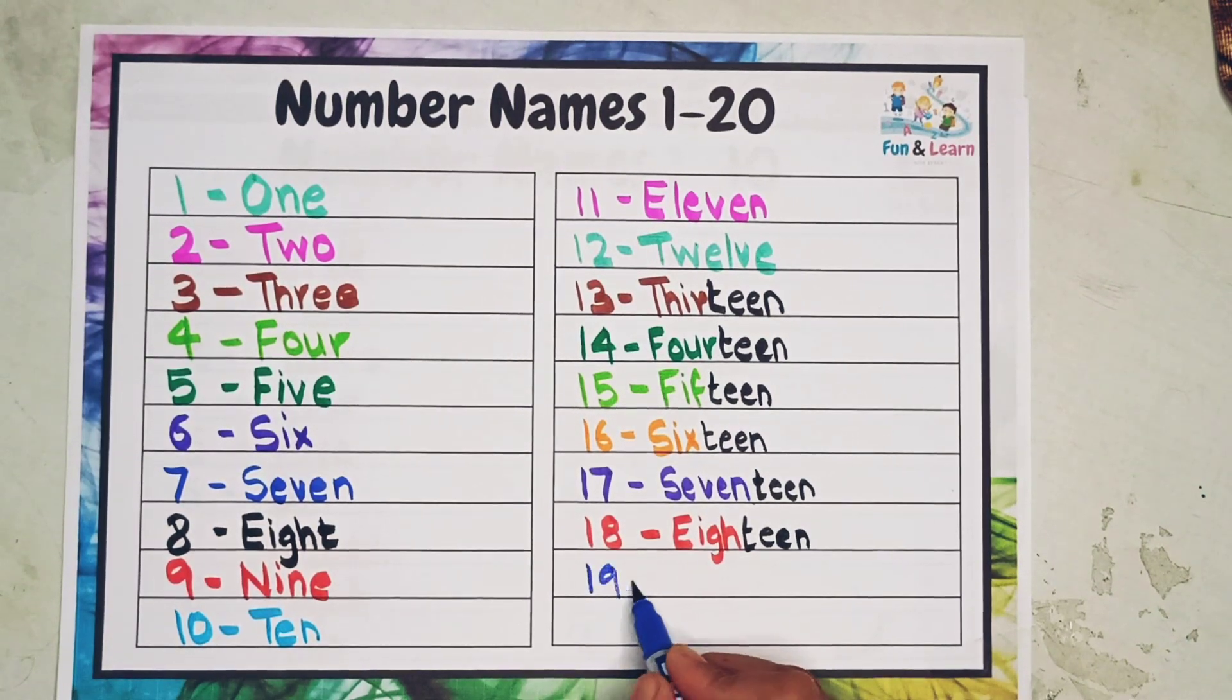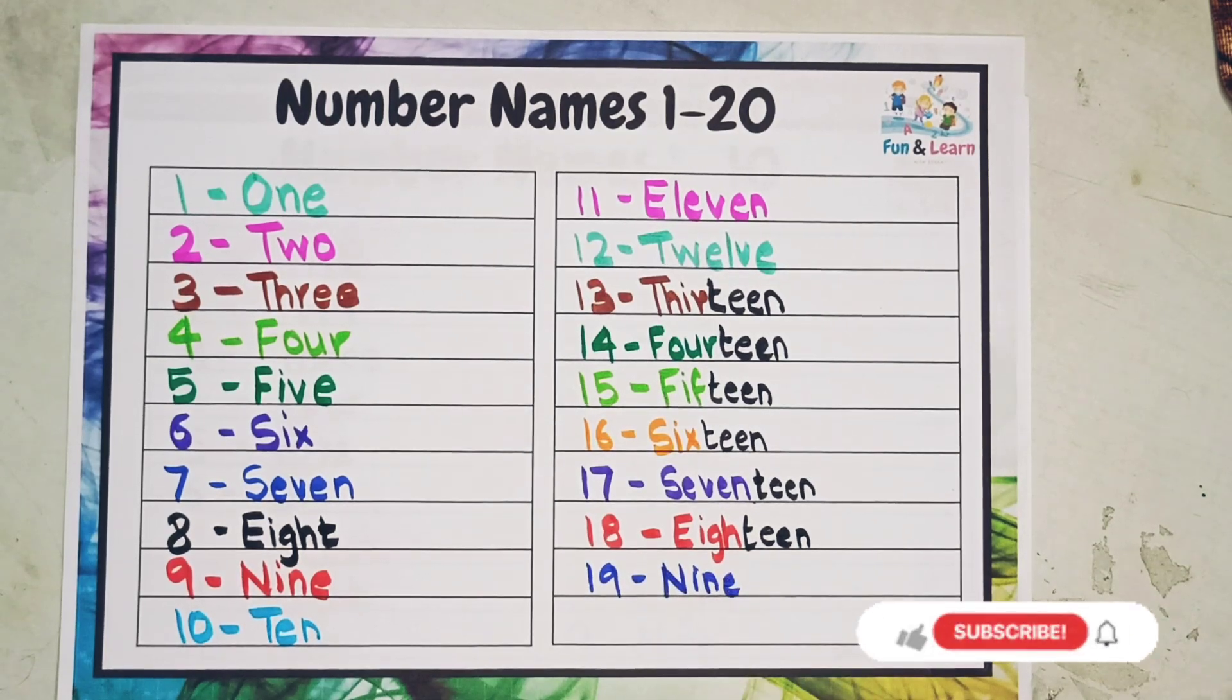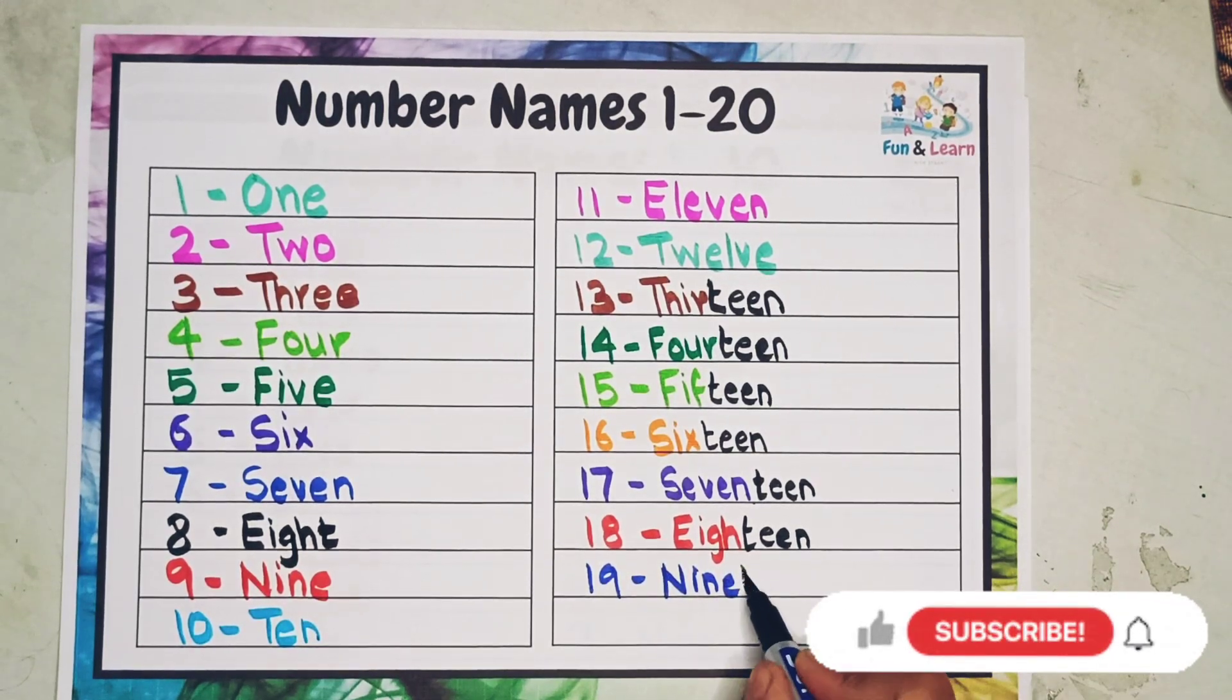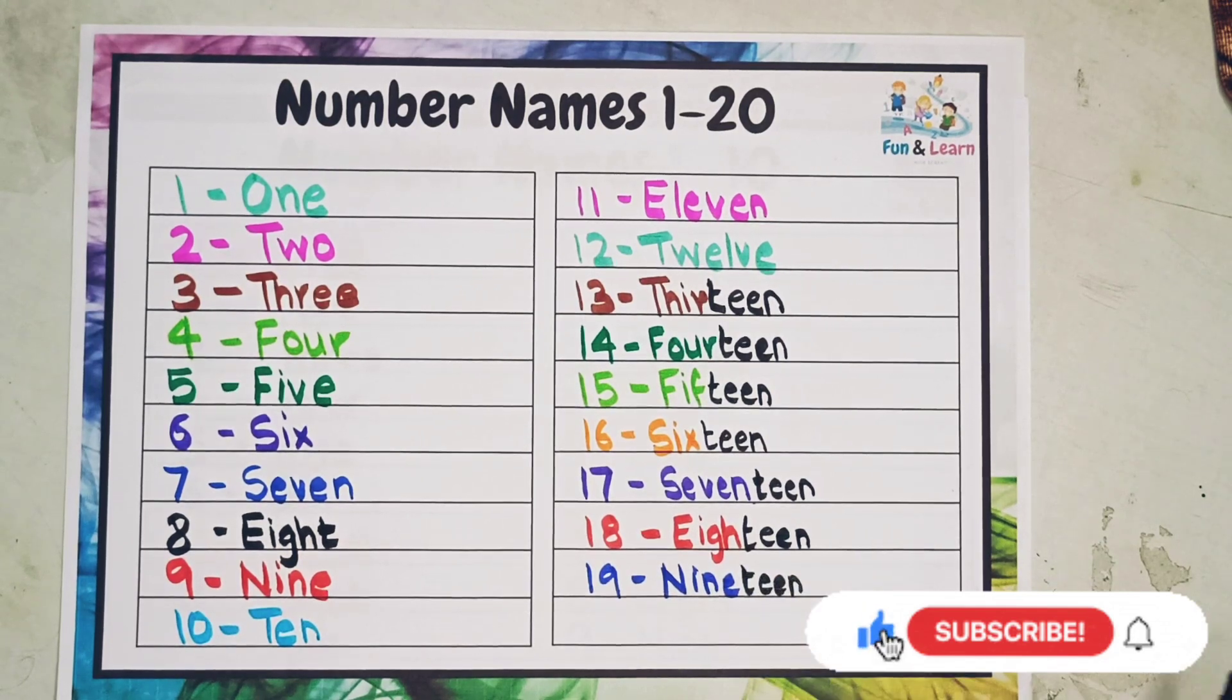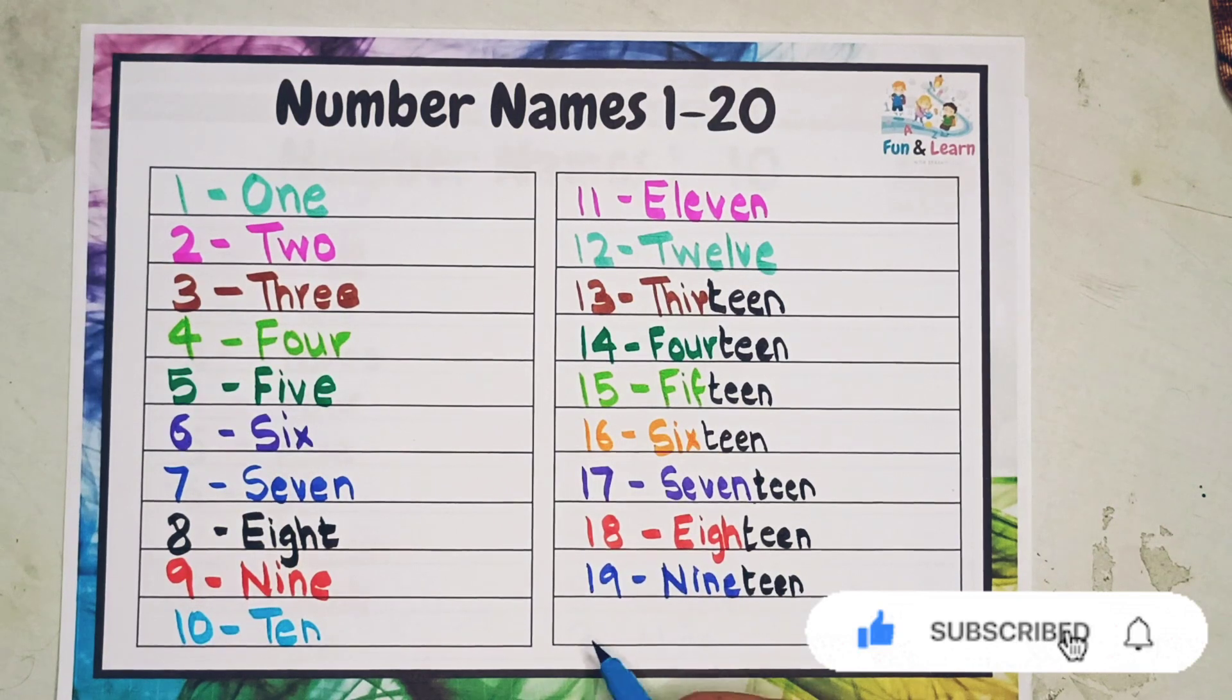The next is 19: N-I-N-E-T-E-E-N, nineteen. And the last number is 20: T-W-E-N-T-Y, twenty.